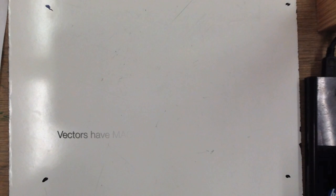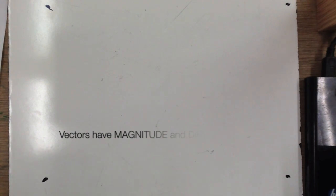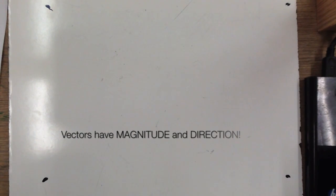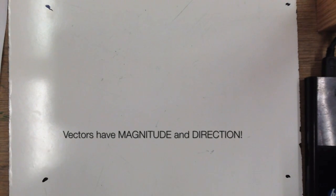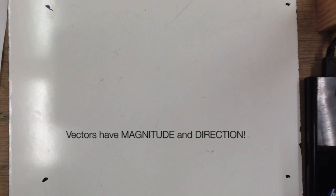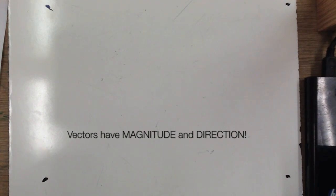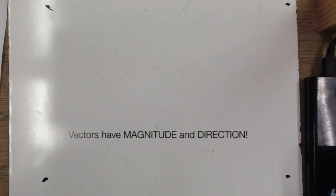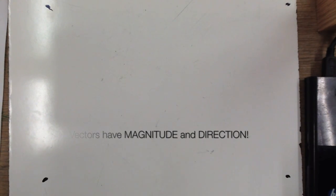When we talk about forces, forces are a type of what we call a vector. This term vector is extremely important. The first thing you need to know about vectors is that they have magnitude and direction. Magnitude refers to some type of number — you might also hear it called size. So vectors have size and direction. For example, if I asked what size pants or shoes you wear, you'd give me a number.